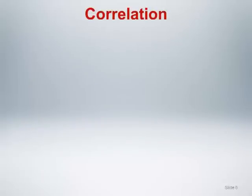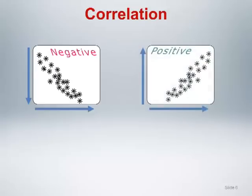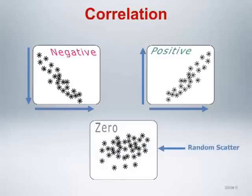We can classify patterns of linear correlation as follows. If the data points cluster in a straight-line fashion moving from the upper left to the lower right, this indicates negative linear correlation, meaning the two variables are inversely related — as one variable tends to decrease, the other tends to increase. If the data points cluster moving from the lower left to the upper right, this indicates positive linear correlation, meaning the two variables tend to increase or decrease together. If the data points cluster in a random fashion with no apparent straight-line relationship, this indicates zero or no linear correlation, meaning the two variables are not linearly related.